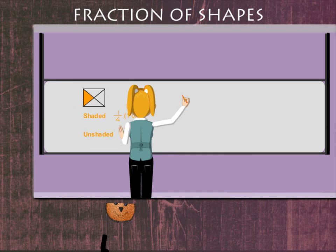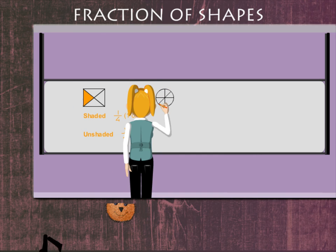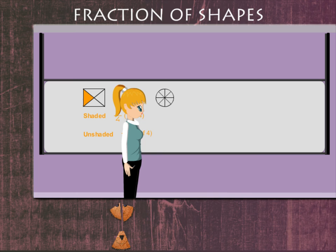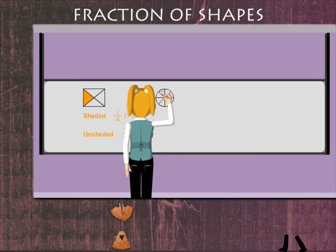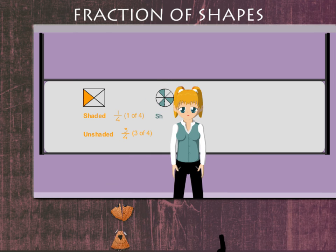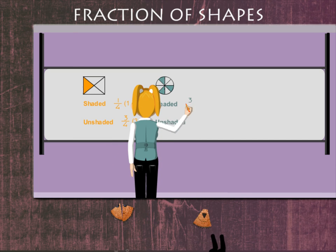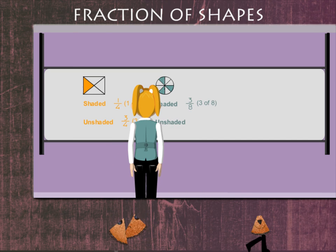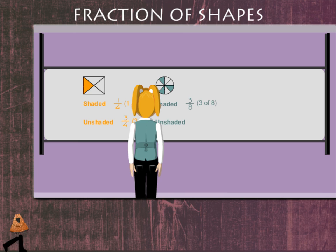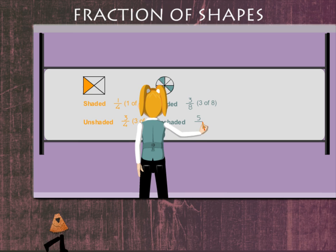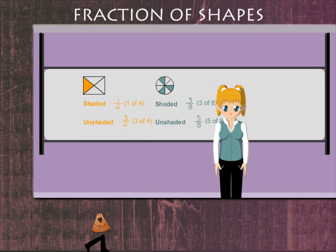She draws a circle and divides it into eight parts. She shades three parts, which means three-eighth, and the unshaded is five-eighth.